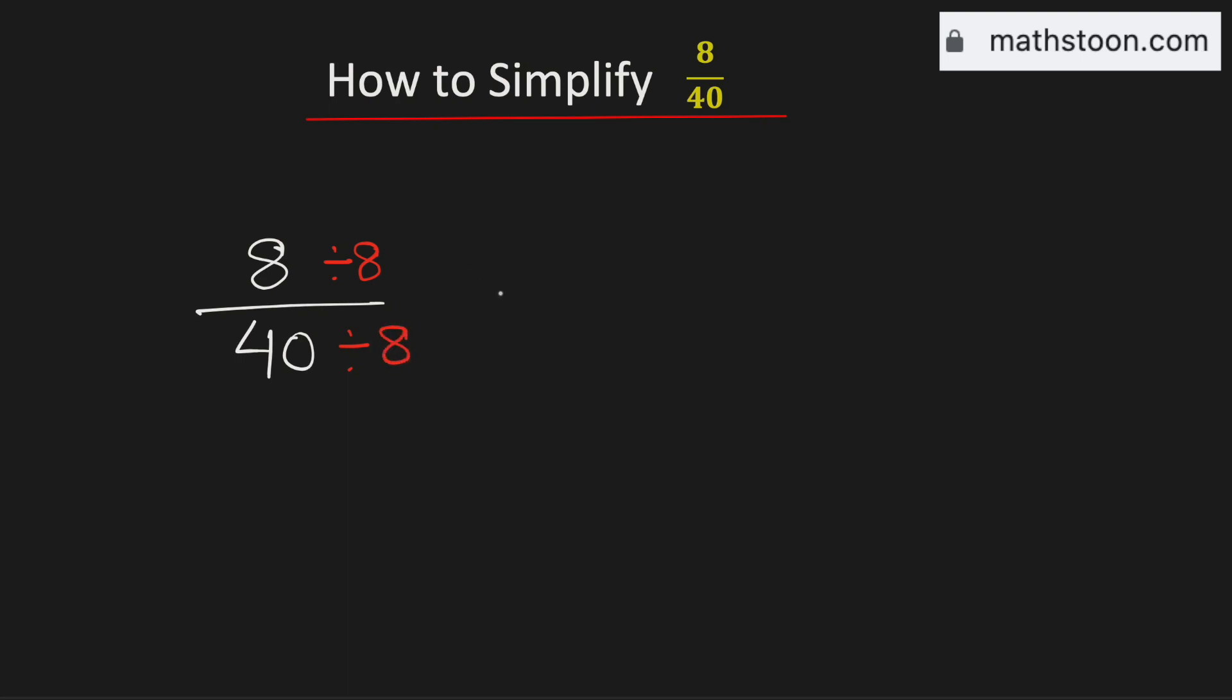And by doing so we will get 1 in the numerator and 5 in the denominator. Now see that there is no common divisor between 1 and 5 other than 1.